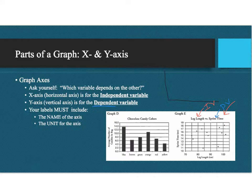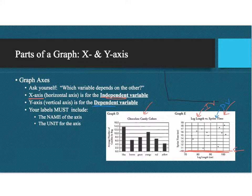So when you graph, the independent variable is always on the X axis. Here, leg length is on the X axis. For graph D with colors, the number of candies is going to depend on what color you have in the bag, so your independent variable — color — is on the X axis. The Y axis is for your dependent variable, so in graph E, time was dependent on leg length, meaning time goes on the Y axis.